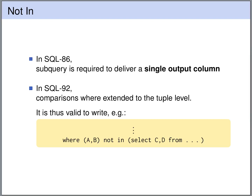Until SQL version 86 the subquery was required to deliver a single result column. Since SQL 92 this has been relaxed so now the subquery can return more than one result column. We can check whether a tuple appears in the table computed by this query — that is, whether a certain row appears in this table.